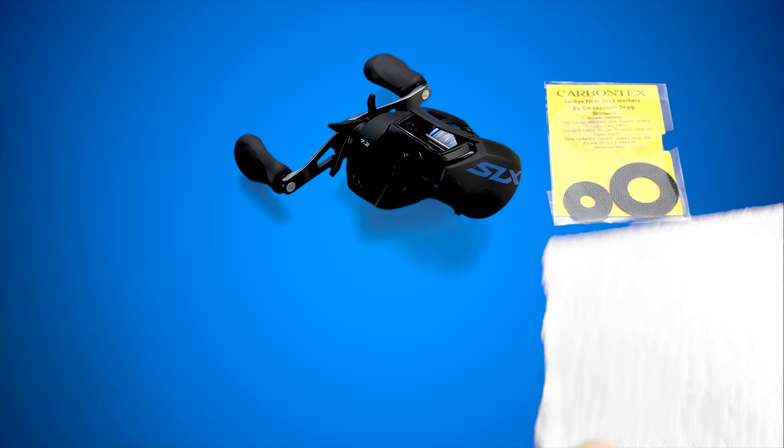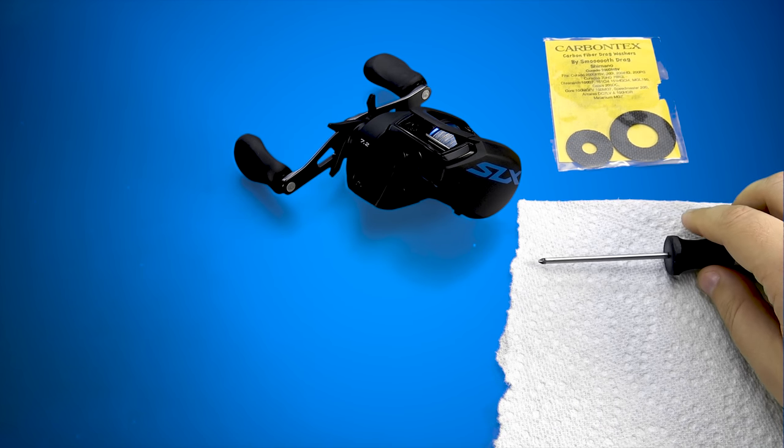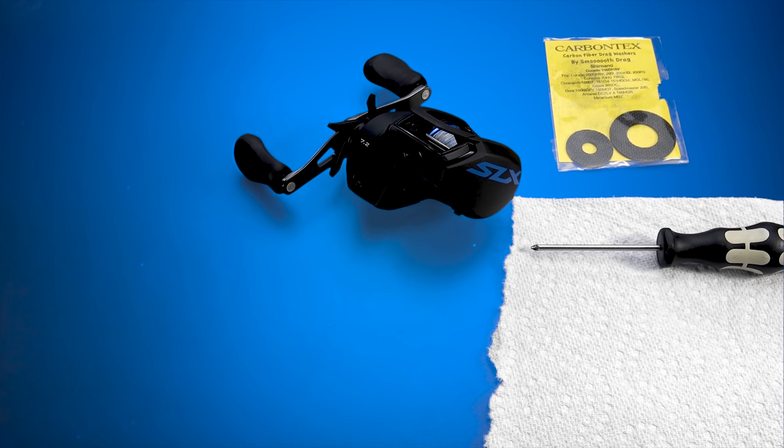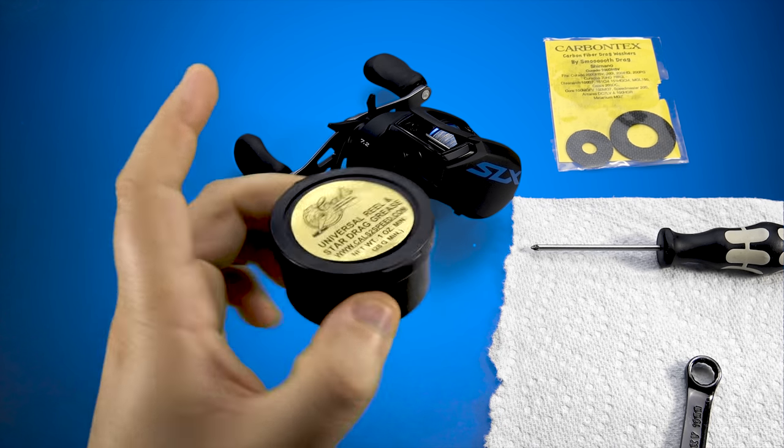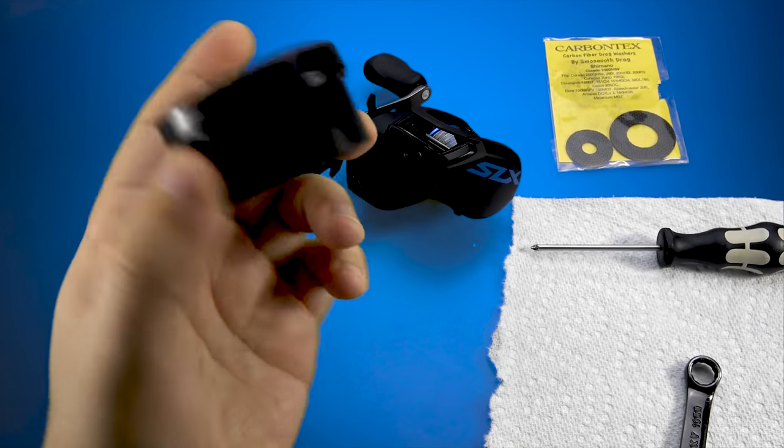You need a paper towel, a size zero screwdriver - this is a size zero posi drive but you can use a Phillips - and you need a 10 millimeter wrench. That's essentially all you're going to need.